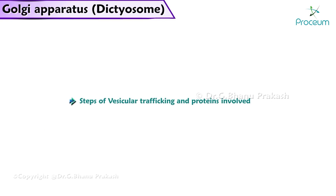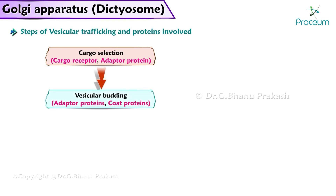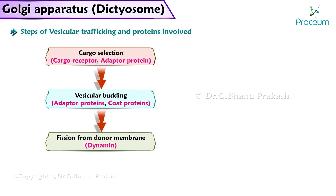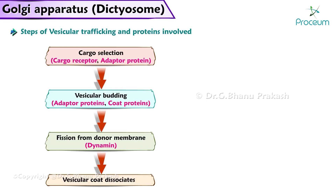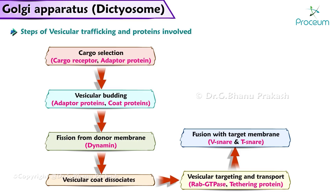Let's now investigate the steps of vesicular trafficking, as well as the proteins involved in those steps. First, there is cargo selection, which involves a cargo receptor and an adapter protein. Then, there is vesicular budding, which involves adapter proteins and coat proteins. Then, there is fission from the donor membrane, which involves dynamin. After that, the vesicular coat dissociates. And after that, vesicular targeting and transport occurs, which involves RAB-GTPase and a tethering protein. The final step is the fusion with the target membrane, which involves both V-snare and T-snare.